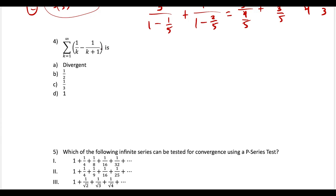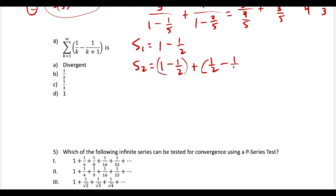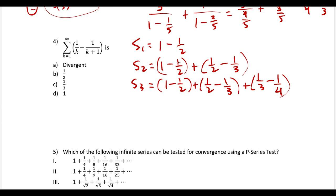Question four is a telescoping series. I look for the nth partial sum by plugging in terms. The first partial sum is 1 − 1/2. The second adds a 1/2 − 1/3 term. The third adds 1/3 − 1/4. The pattern is that each inside term cancels — we have −1/2 + 1/2, −1/3 + 1/3 — and we're left with just the first thing minus the last thing.